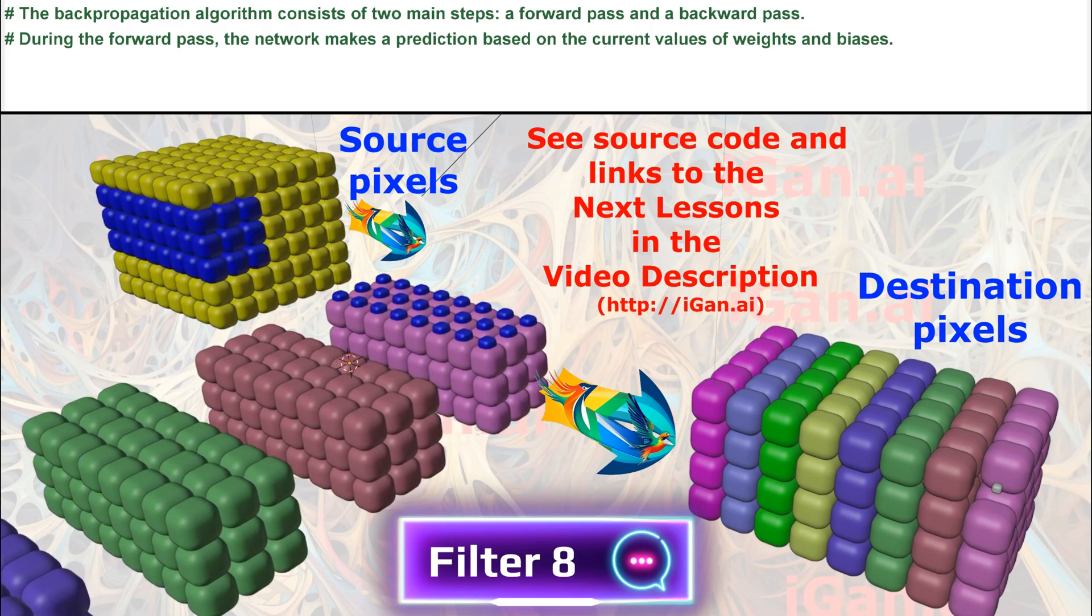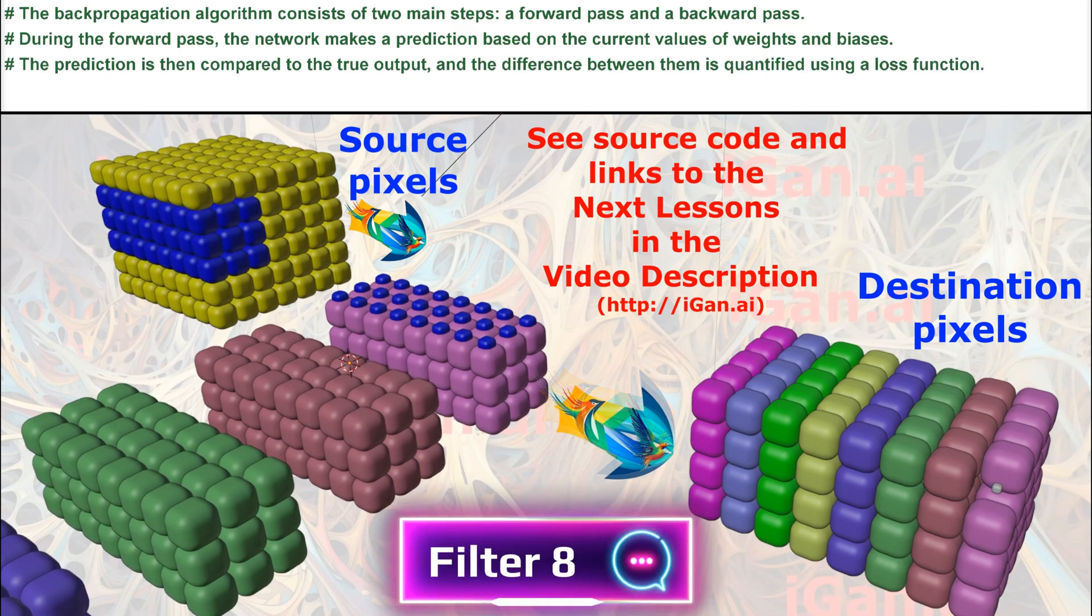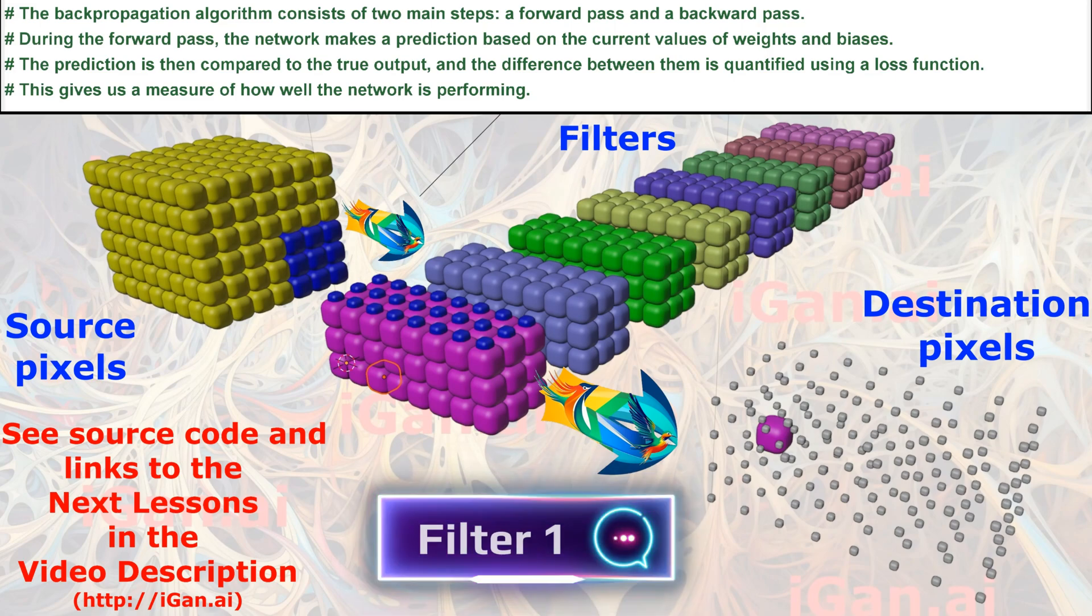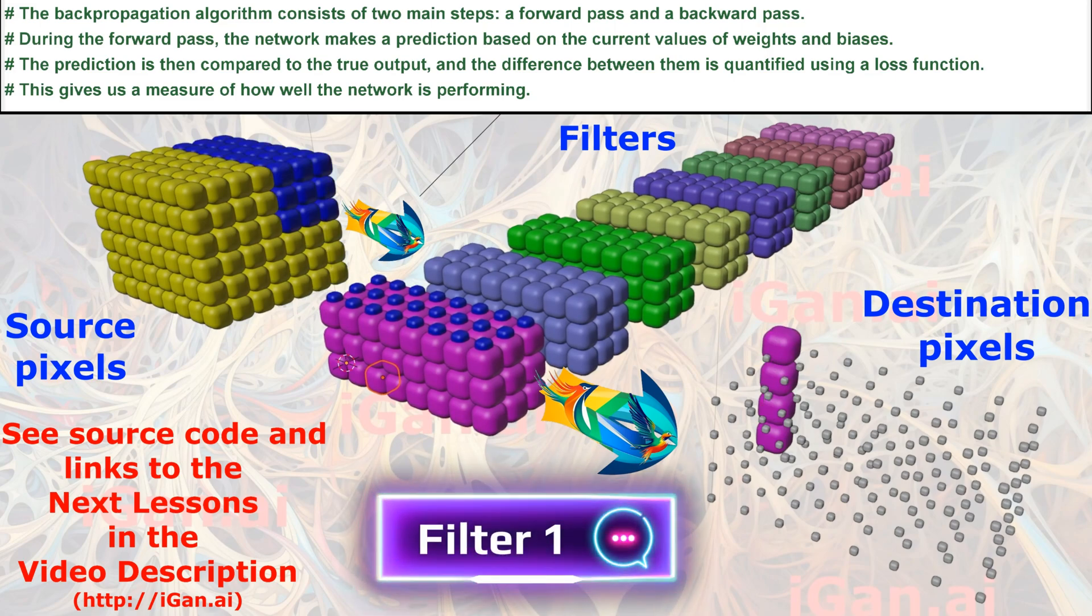During the forward pass, the network makes a prediction based on the current values of weights and biases. The prediction is then compared to the true output, and the difference between them is quantified using a loss function. This gives us a measure of how well the network is performing.